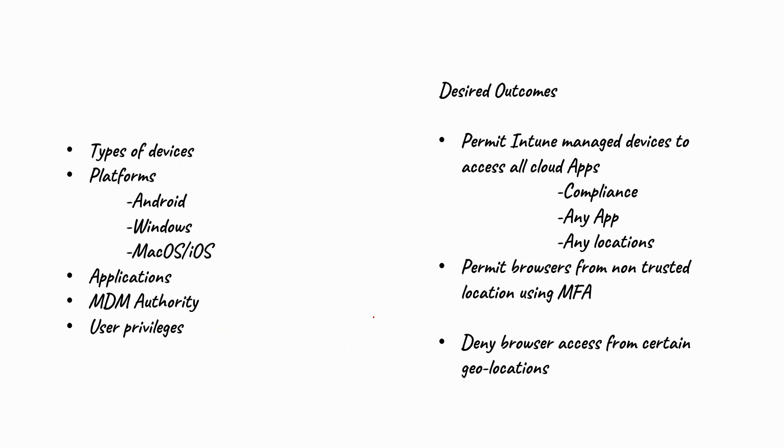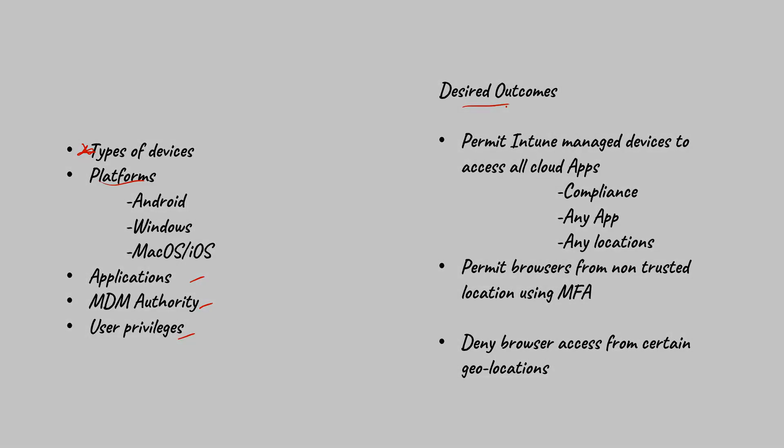In this nugget, we looked at some of the considerations to make when designing conditional access policies, such as taking an inventory of the types of devices that are within an organization, the types of platforms available, applications, MDM authority, user privileges, as well as what the desired outcomes are when organizations are setting up policies like these. I hope this has been informative for you, and I would like to thank you for viewing.